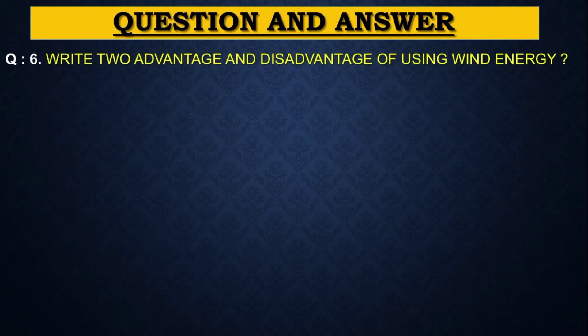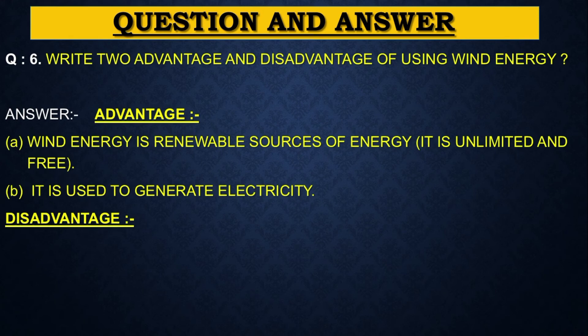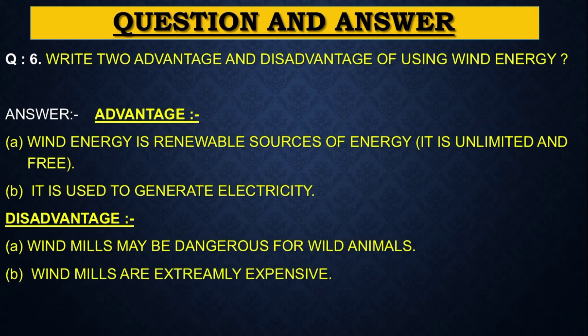Next question. Write two advantages and disadvantages of using wind energy. Answer is advantage A: Wind energy is a renewable source of energy. It is unlimited and free. B: It is used to generate electricity. Disadvantage A: Wind mills may be dangerous for wild animals. B: Wind mills are extremely expensive.